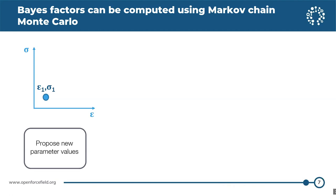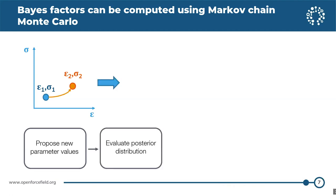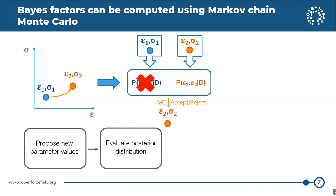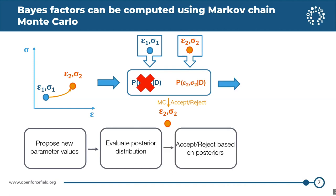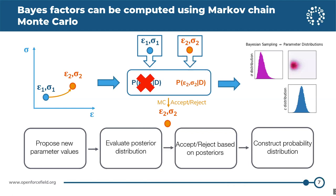The Monte Carlo process looks something like this: we start somewhere, propose a new set of parameter values, and evaluate the posterior distribution for that set and the previous set. Then we either accept or reject the move. If accepted, we treat that new set of parameters as a draw from the posterior distribution. By doing this enough times, we construct posterior probability distributions. It's also possible to do this over model space using reversible jump Monte Carlo, making moves between both continuous parameter spaces and discrete model spaces.